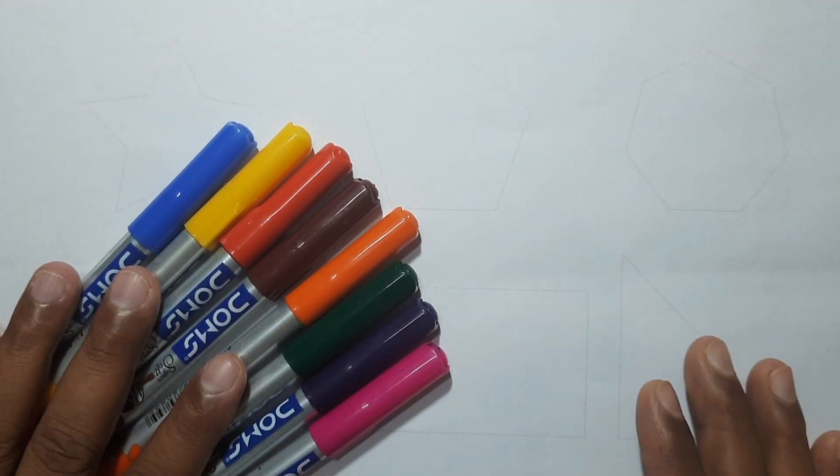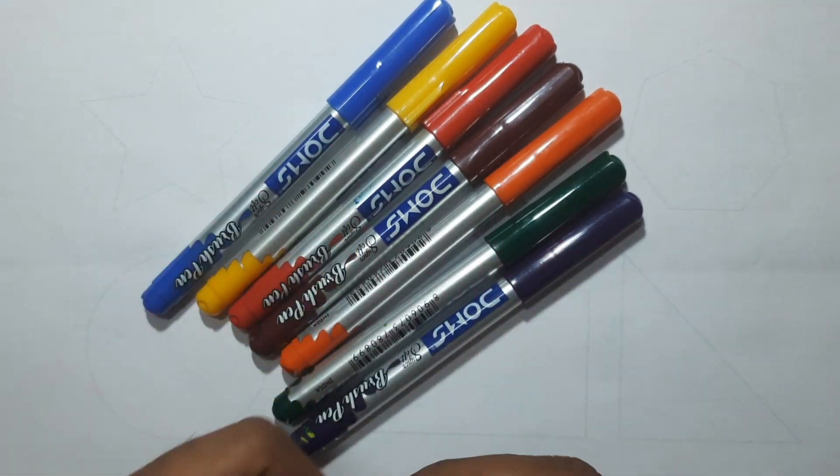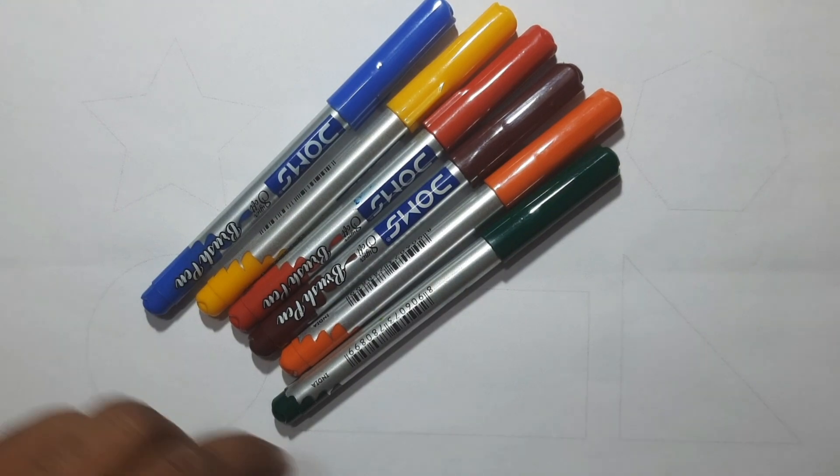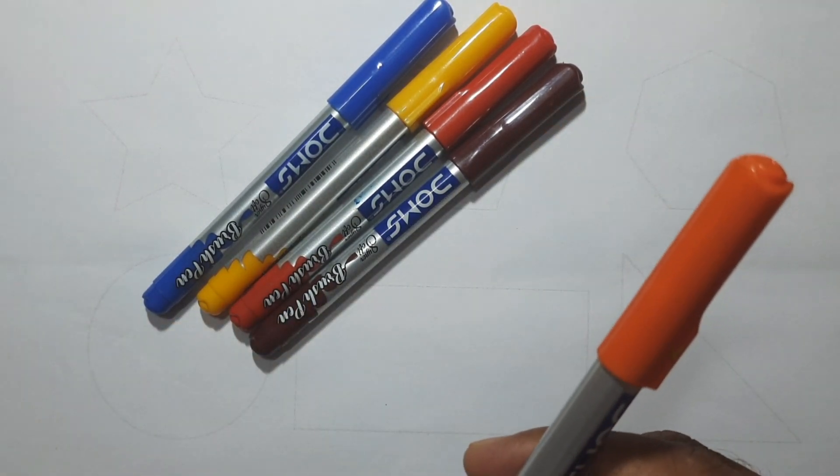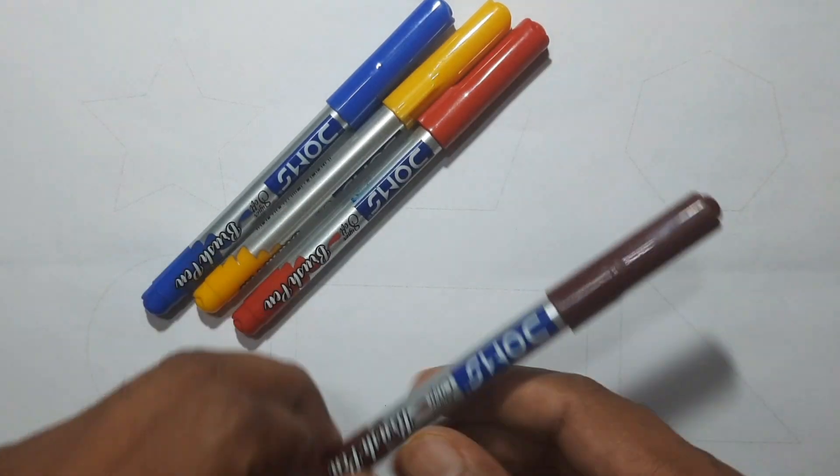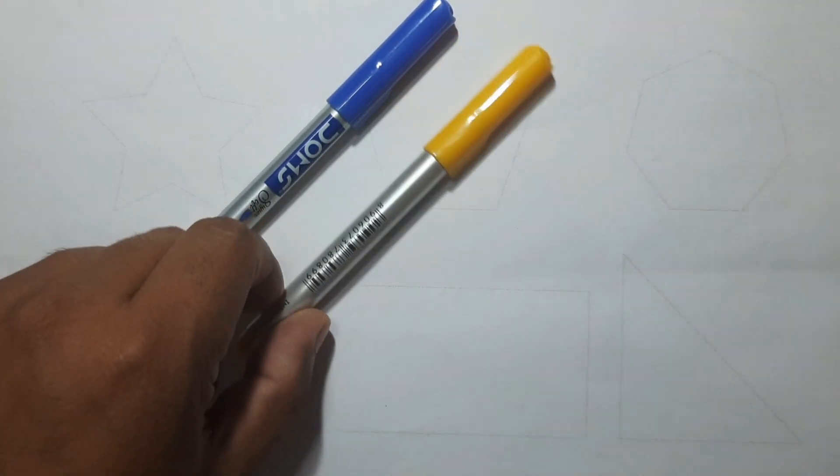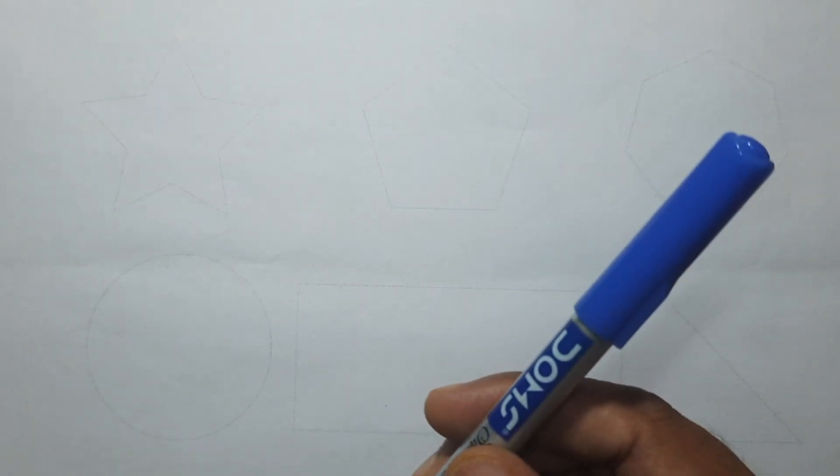Hello kids, let's learn some color names. This is pink color, this is violet color, this is dark green color, this is orange color, this is brown color, this is red color, this is yellow color, and this is blue color.